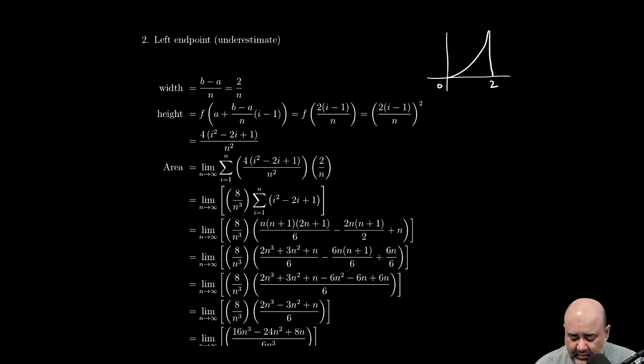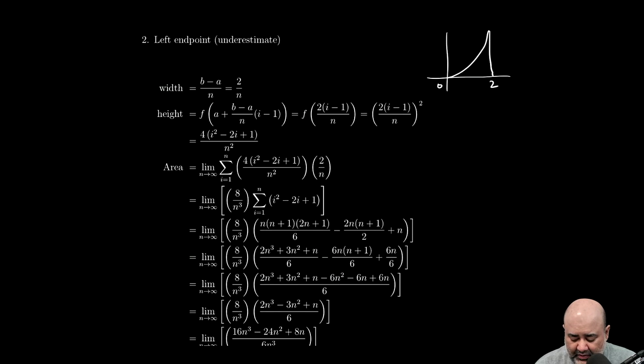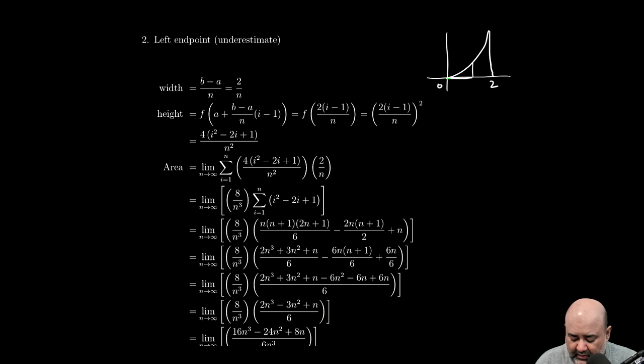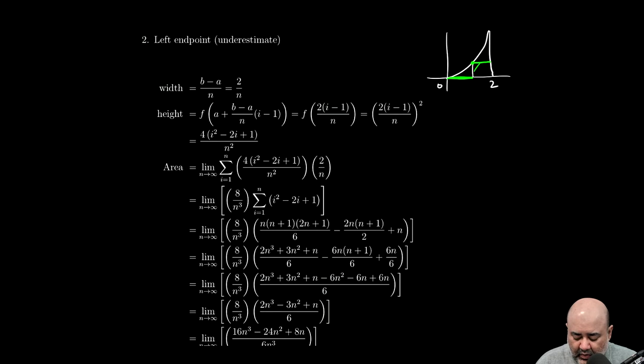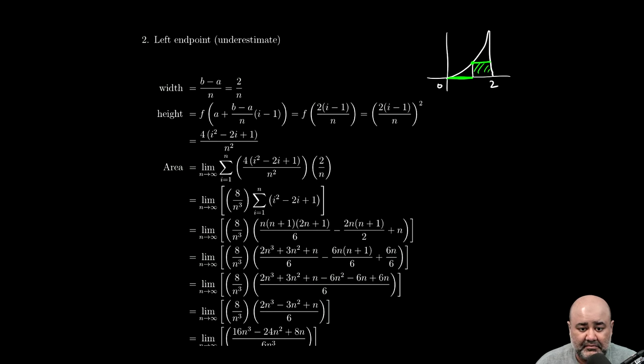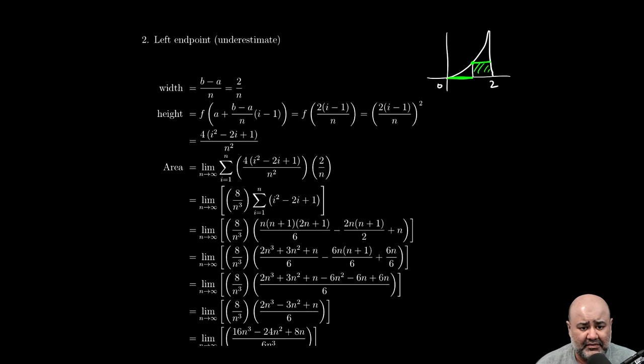We want an underestimate, so because it's an increasing function, we know that we have to use the left endpoint. So this will be the first rectangle, it's the degenerate rectangle, and then using this as the height of the next one, we're going to get basically just that region if we use left endpoints.